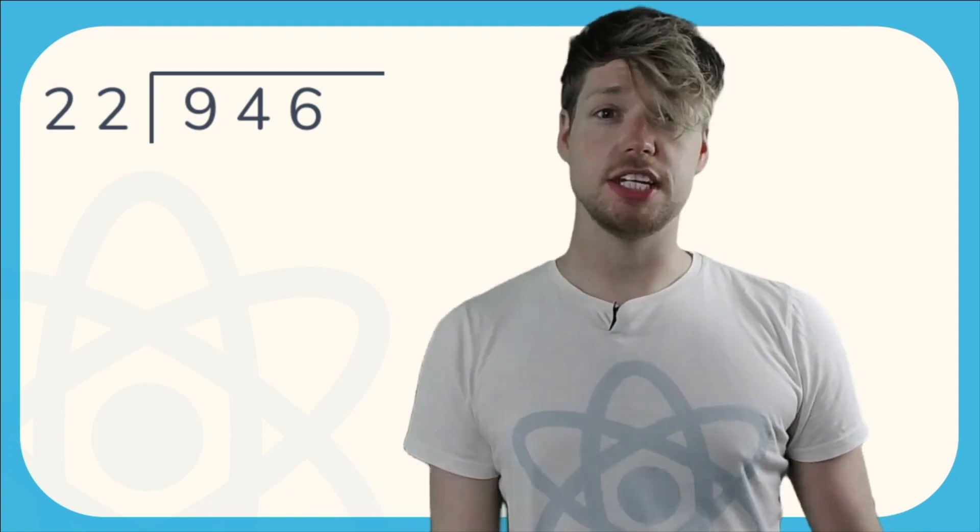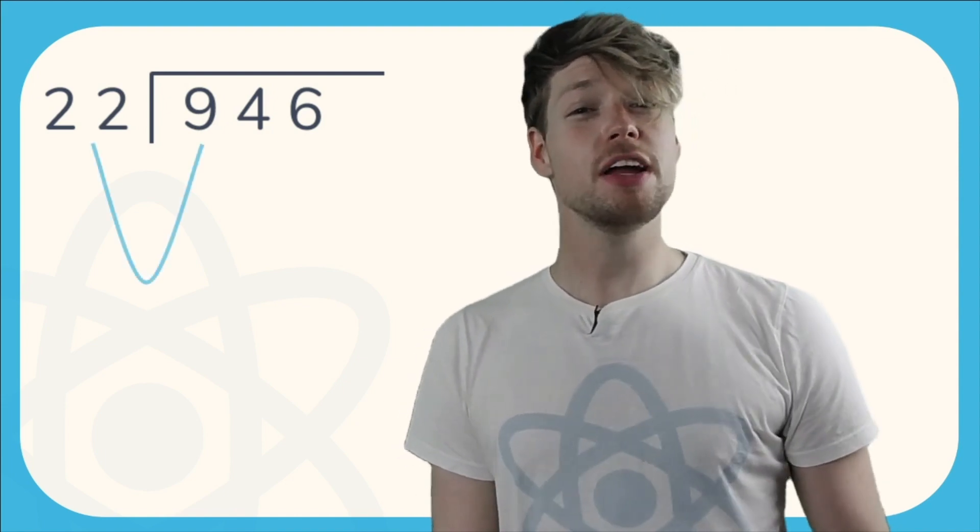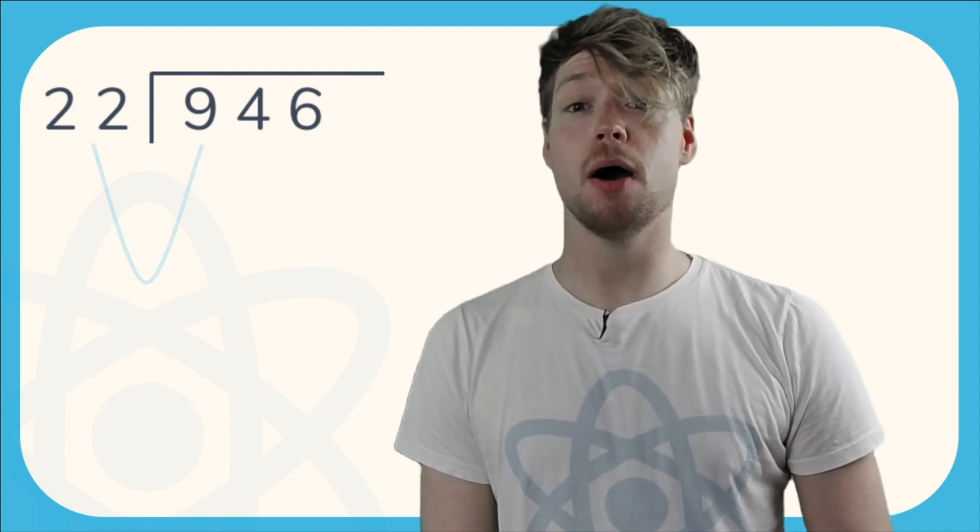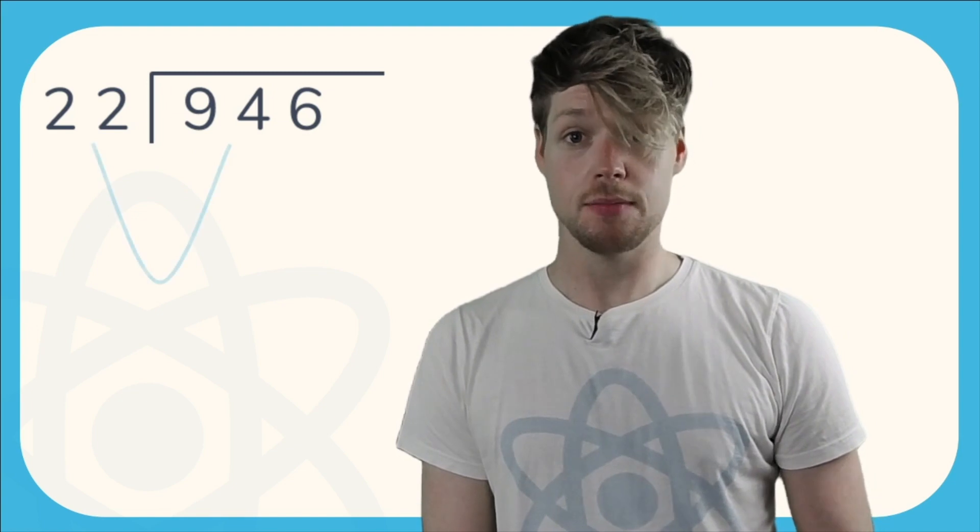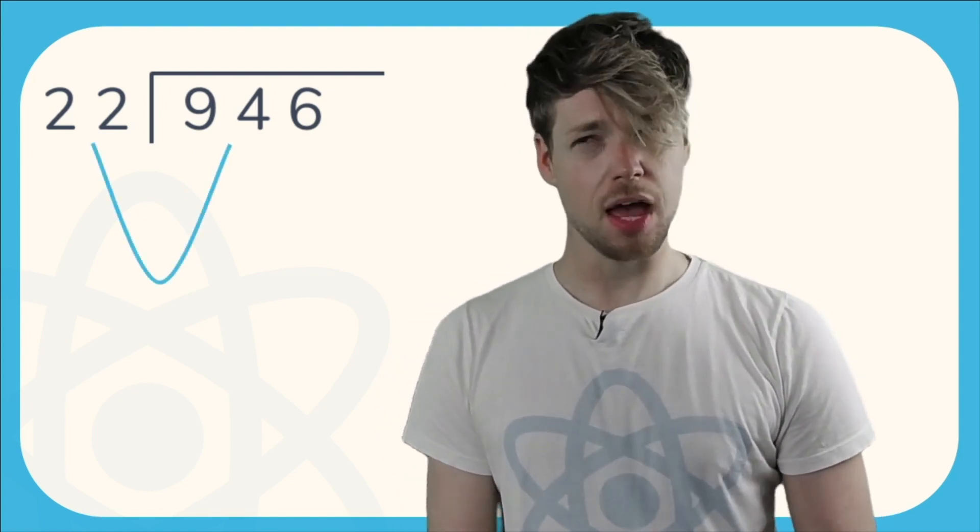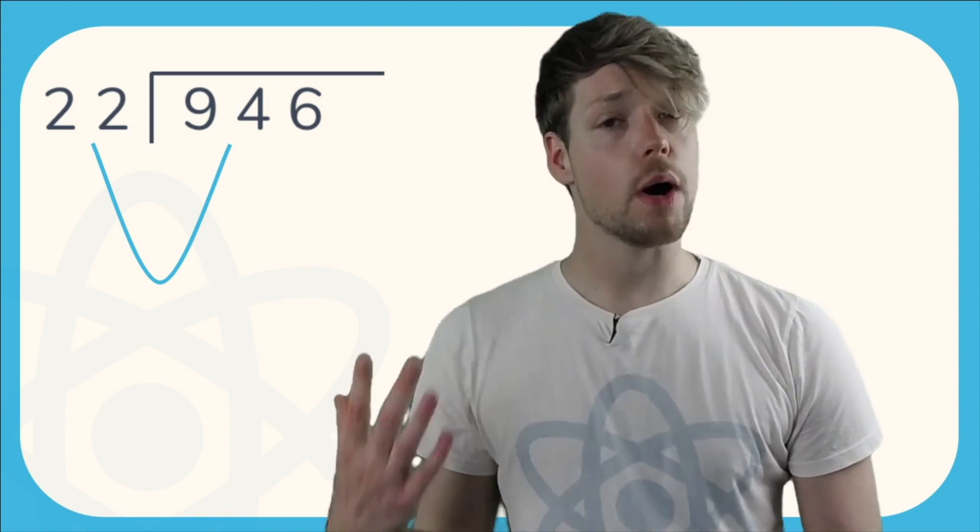The first thing we need to do is see, can we divide the first digit in 946 by 22? You might realize that actually we can't because 22 is bigger than 9. When this is the case we need to combine the 9 with the next digit. So we need to do 94 divided by 22.